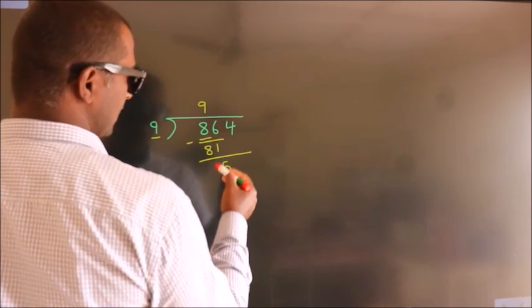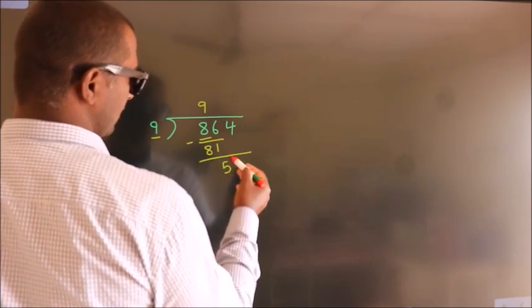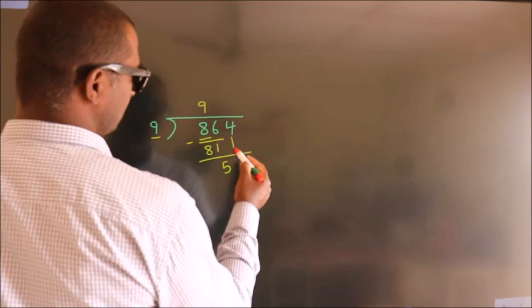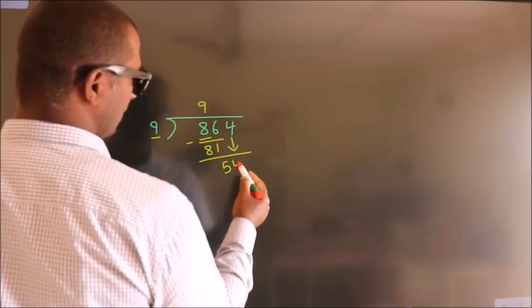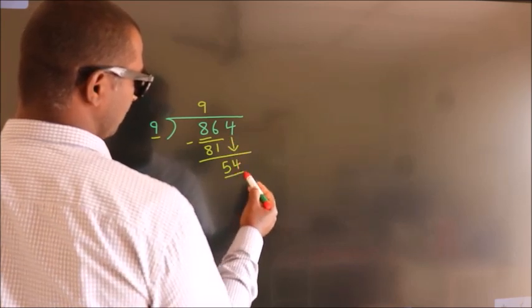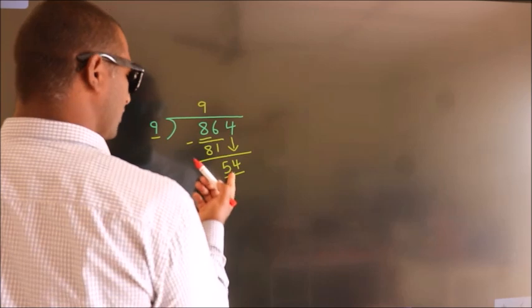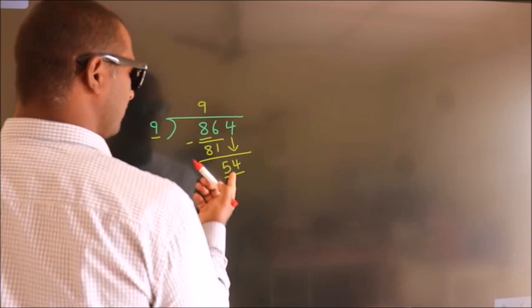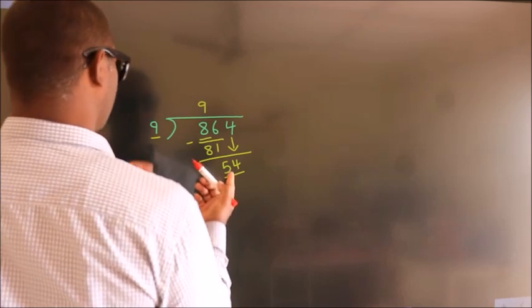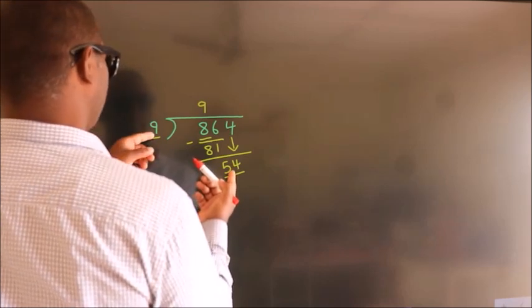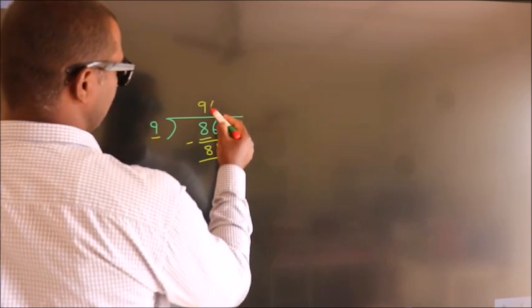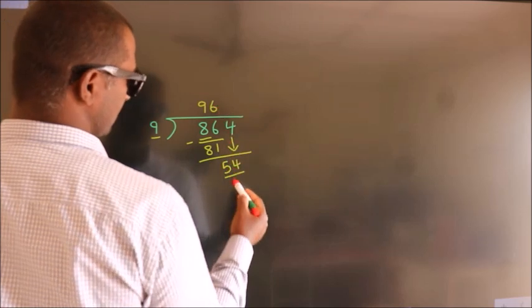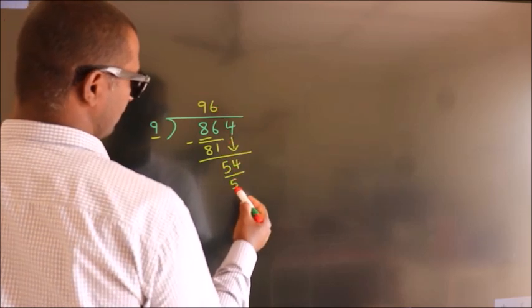After this, bring down the beside number — so 4 comes down, giving us 54. When do we get 54 in the 9 table? 9 times 6 is 54.